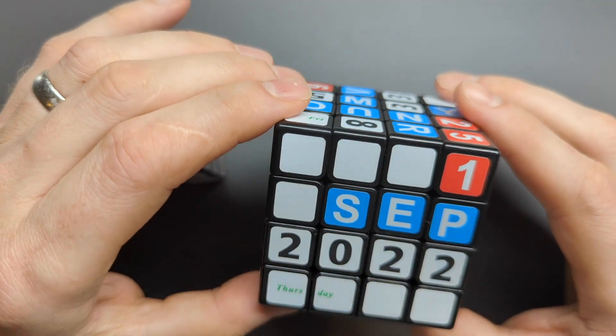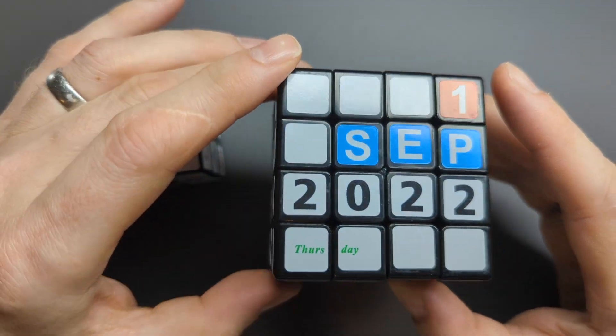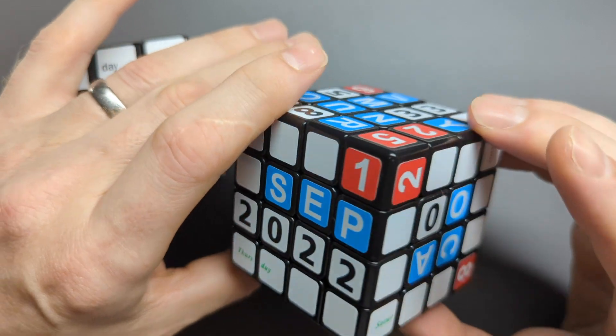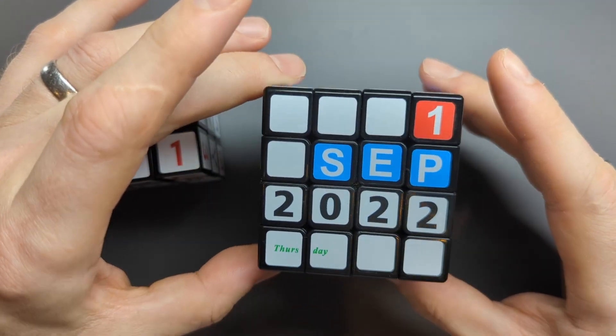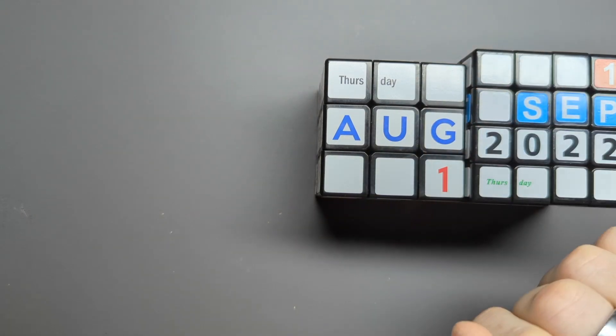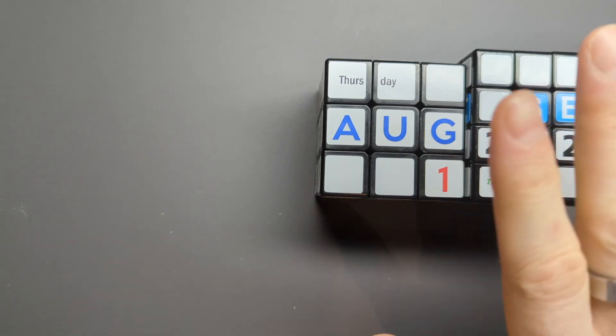And now HKNowStore has them in stock, so that's where I got this one from. I'll put the price below if you're interested. So yeah, there we go—that's the 4x4 calendar cube. Why don't you get one, try it out? And if you want to see a different kind of calendar puzzle, then have a look at this video just here. Thanks for watching, bye.